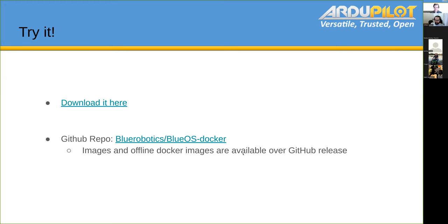We are focusing this right now on Sub and Rover, but we would love to support other vehicles as well. You can try it — the images are available as a GitHub release. You can download the image and flash it to a Raspberry Pi.